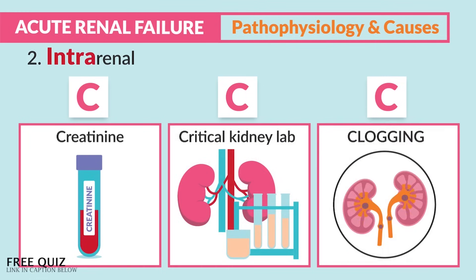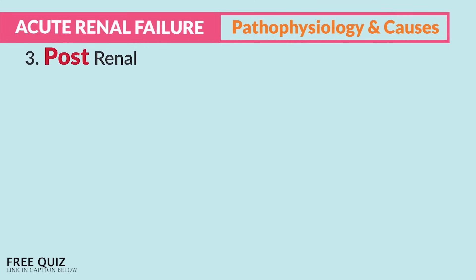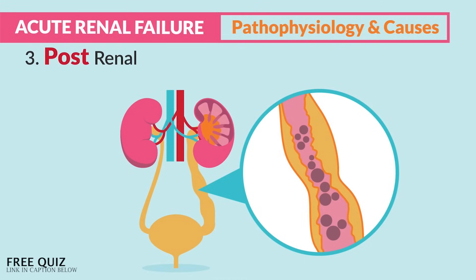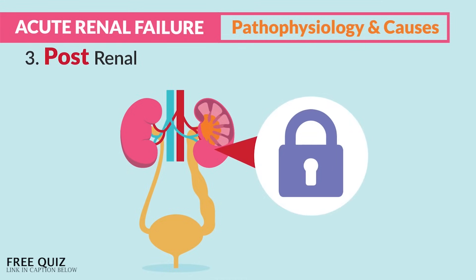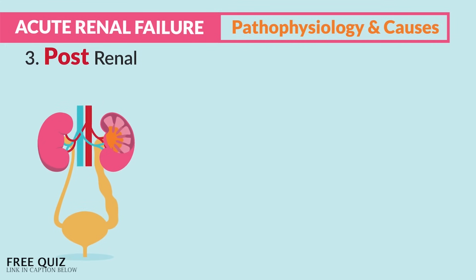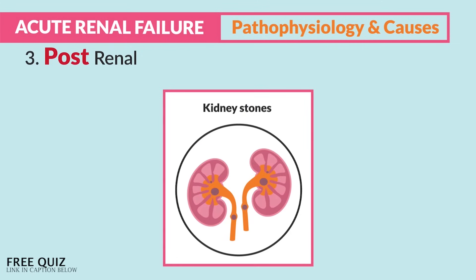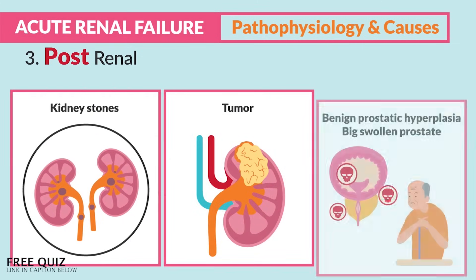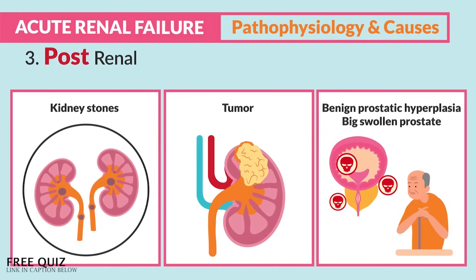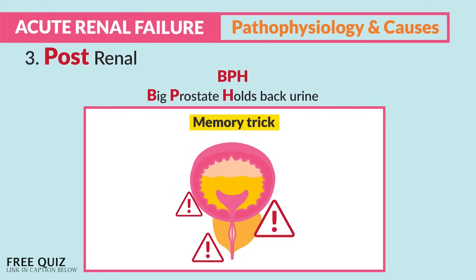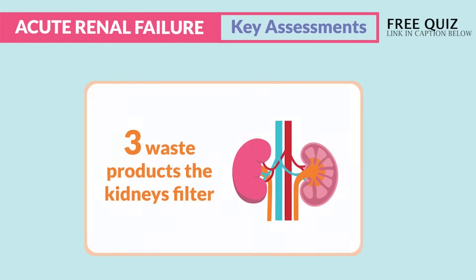Post-renal — think 'past the renals' — there's a renal blockage after the kidneys that blocks the outflow of urine. Urine can't get out of the kidney, causing pressure, pain, and strain on the renals. This occurs with clients with renal calculi (kidney stones), a tumor, or BPH — benign prostatic hyperplasia — a big swollen prostate in older men. Memory trick: BPH is a big prostate that holds back urine, creating an outflow problem.